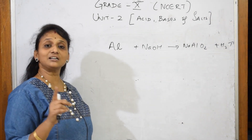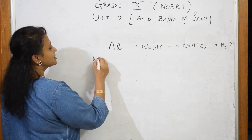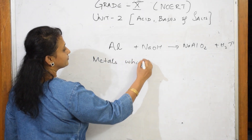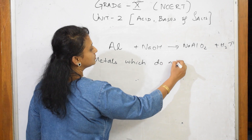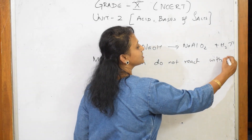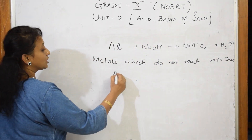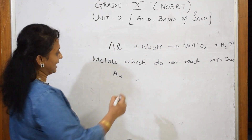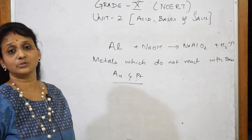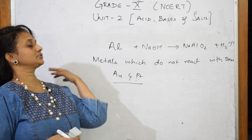Next important question they may ask: which metals will not react with sodium hydroxide? The answer is gold (Au) and platinum. Gold and platinum are the metals which will not react with the base. Add this to your notes, students.